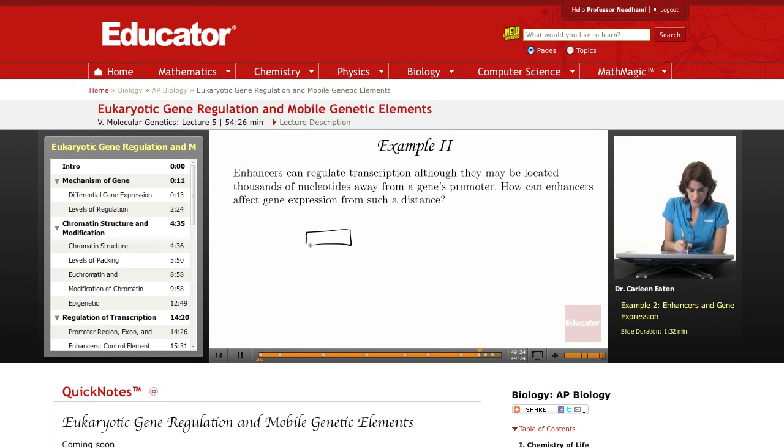So recall that you can have an enhancer sequence, and then let's say this is the 5' end. The promoter might be here, and then we have the gene. This enhancer, this distance can be thousands of nucleotides.